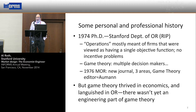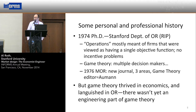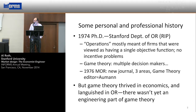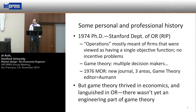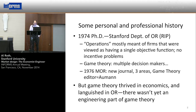It looked like game theory was going to really thrive in operations research because in 1976, the new journal Mathematics of Operations Research was formed, and it had three areas, one of them being game theory. The game theory editor was Bob Aumann, the best game theorist in the world. The main account of my dissertation appeared in volume one, number one of MOR.